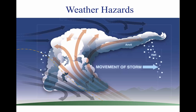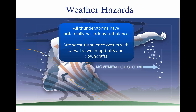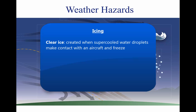An aircraft entering a tornado vortex is almost certain to suffer structural damage. Since the vortex extends well into the cloud, any pilot inadvertently caught on instruments in a severe thunderstorm could encounter a hidden vortex. Potentially hazardous turbulence is present in all thunderstorms, and a severe thunderstorm can destroy an aircraft. Strongest turbulence within the cloud occurs with shear between updrafts and downdrafts. Updrafts in a thunderstorm support abundant liquid water with relatively large droplet sizes. When carried above the freezing level, the water becomes supercooled, and supercooled water freezes on impact with an aircraft. Clear icing can occur at any altitude above the freezing level.